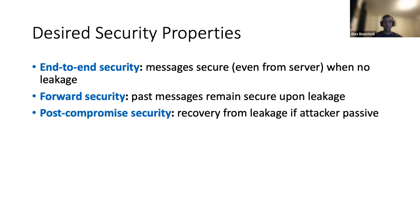Furthermore, we ask for post-compromised security, meaning that the protocol should sort of naturally recover from a leakage if the attacker is passive once this leakage happens. I say naturally because the protocol doesn't know if a user is corrupted, and so this recovery should just be natural — meaning you shouldn't have to actually restart the protocol in order to get security again.